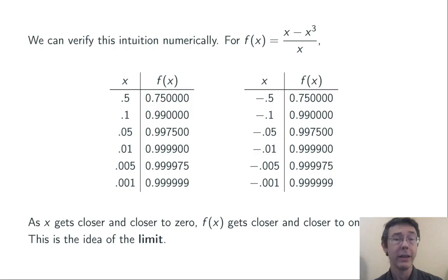Similarly, when x is negative, as x gets closer and closer to 0 from that direction, f(x) also gets closer and closer to 1. This is the notion of the limit. What happens to the function when x gets closer and closer to 0?